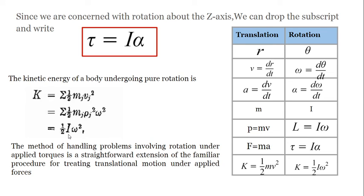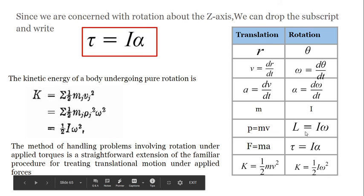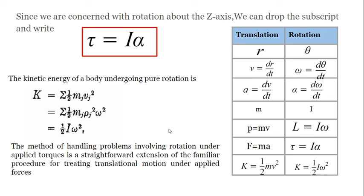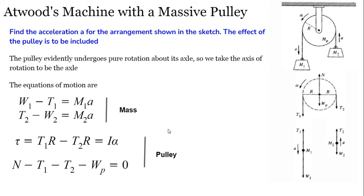The method of handling problems involving rotation under applied forces is a straightforward extension of the familiar procedure of treating translational motion under applied forces. We will discuss translation motion, rotation motion, and work through three examples. The first example is the Atwood machine, which we will discuss in the next video.